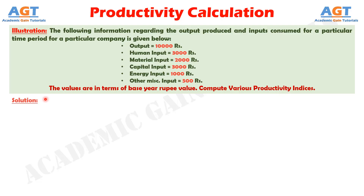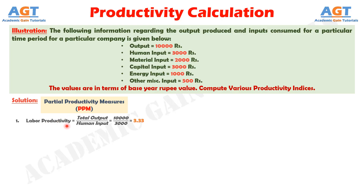Let's move into the solution. First, we will calculate the partial productivity. The calculation of partial productivity depends upon the individual inputs. We are calculating the productivity depending on each individual input like human, material, capital, etc., using the formula: total output divided by individual input. The value of output is 10,000 rupees and the value of human input is 3,000 rupees, so we get a labor productivity of 3.33.